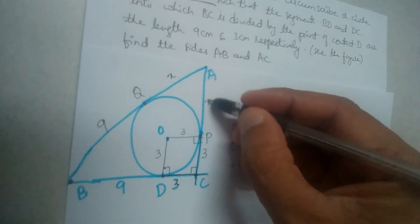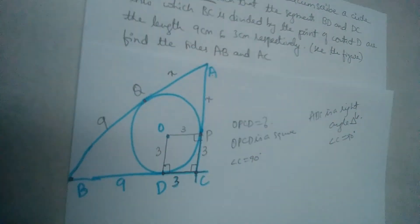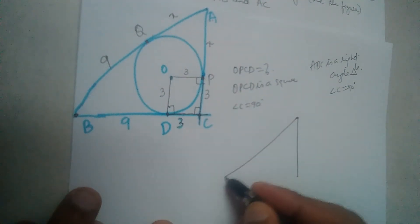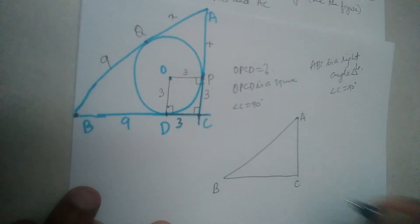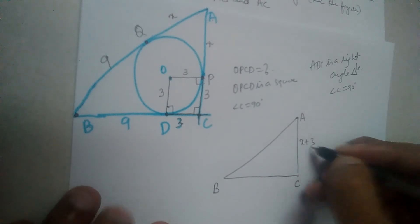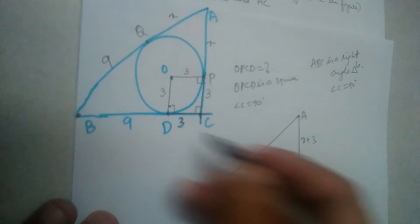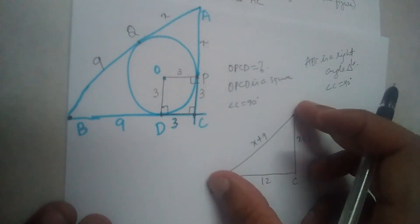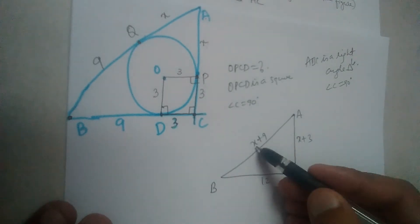If AQ is X, then AP will also be X because AQ and AP are lengths of tangents and they should be equal. Let us draw the triangle here neatly again - right angle triangle ABC. This is X plus 3, this is 9 plus 3, which is 12, and this is X plus 9. We need to find AB and AC. If we find the value of X and substitute it, we will get AB and AC.